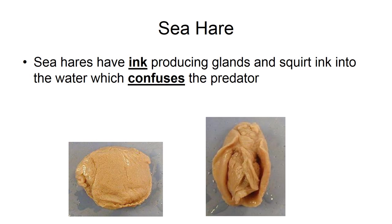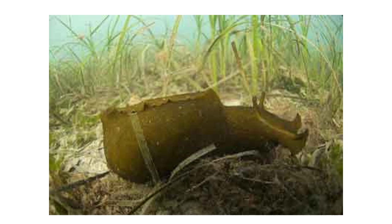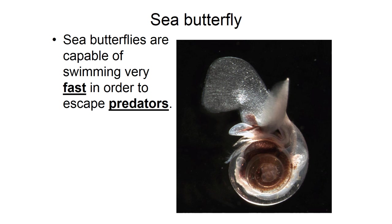This is a sea hare — this one shown is no longer alive. They have ink glands that they can use to confuse predators if under attack. Here's a better image of one that's alive, with the head visible on the right-hand side. A sea butterfly also has a very interesting body shape — they are capable of swimming very fast in order to escape predators.